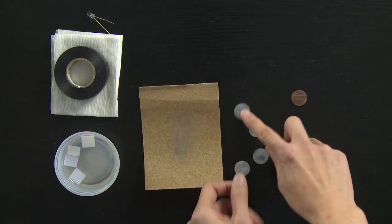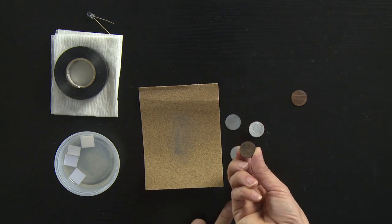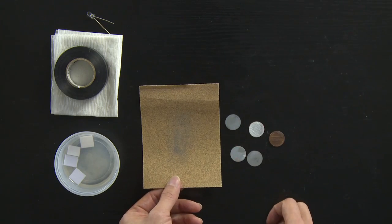Once you have that fourth penny sanded you'll have four pennies that have zinc on one side, copper on the other, and then that fifth intact penny, and you'll be ready to start building your cell.